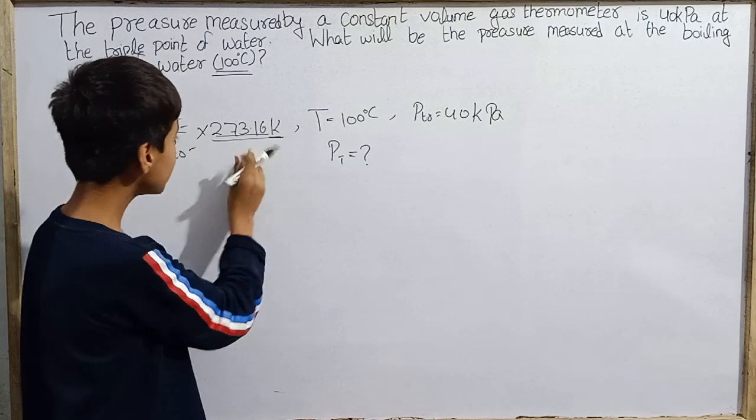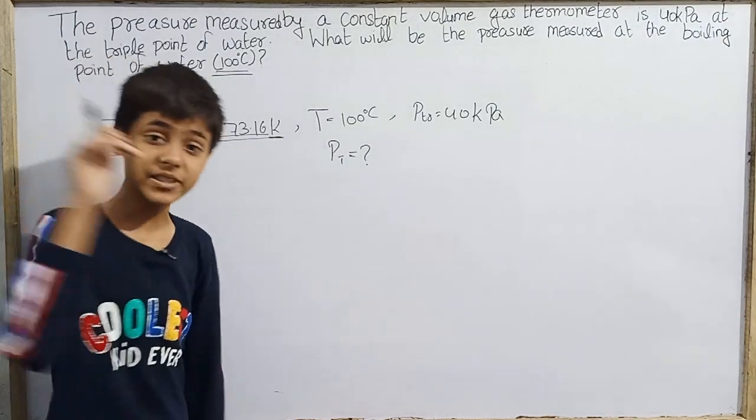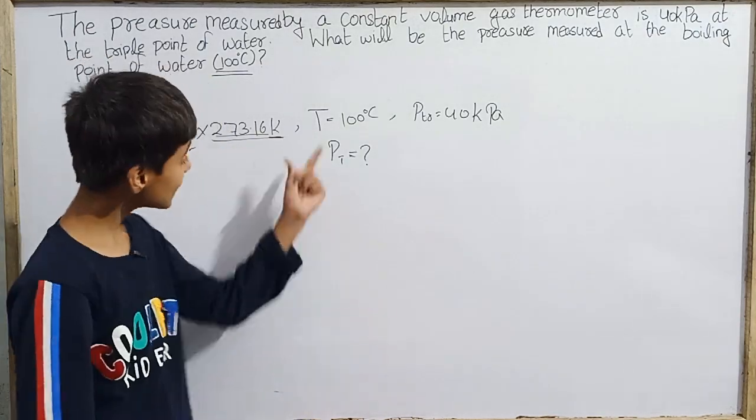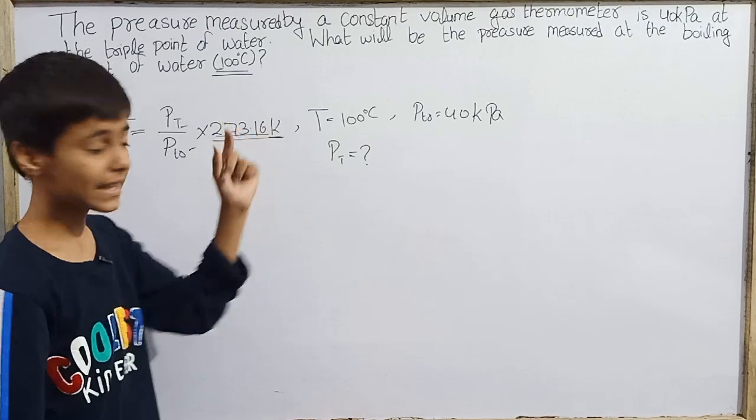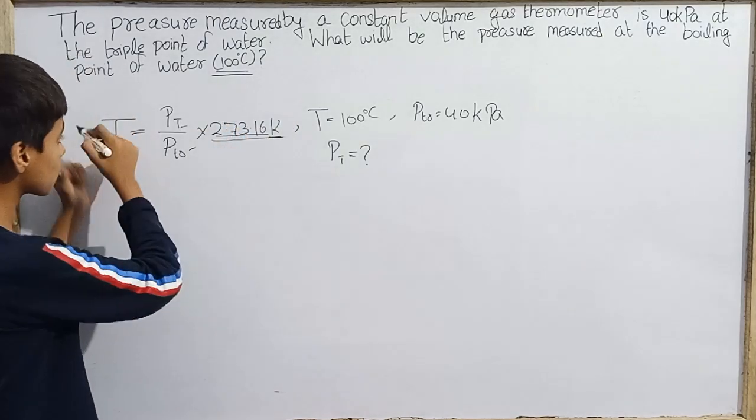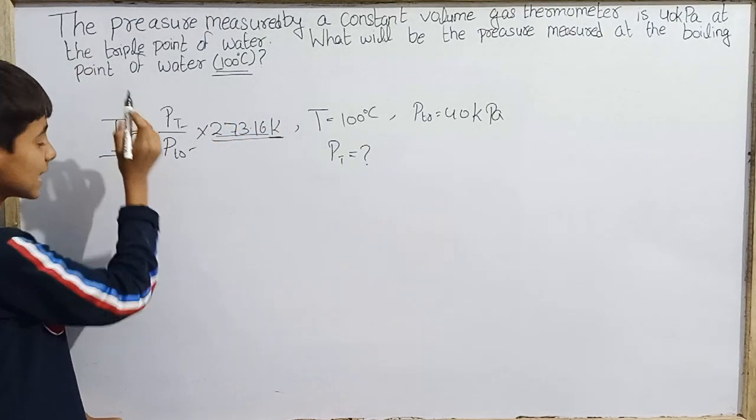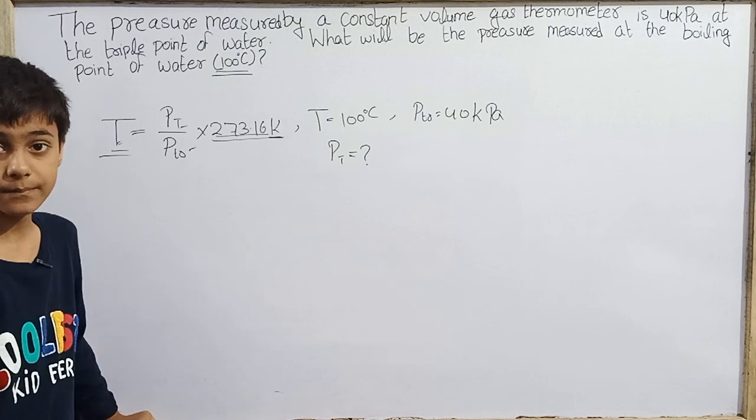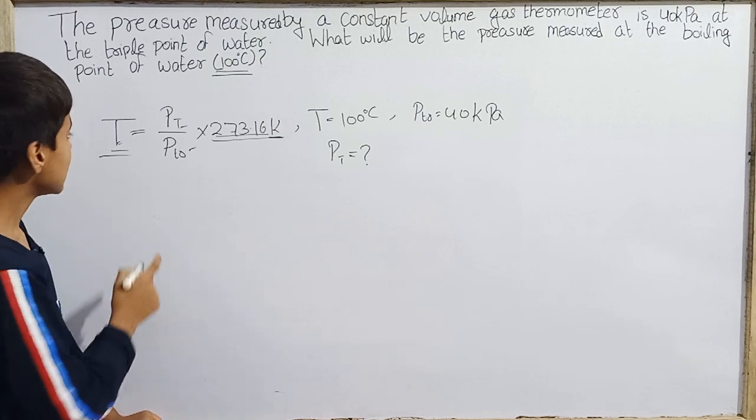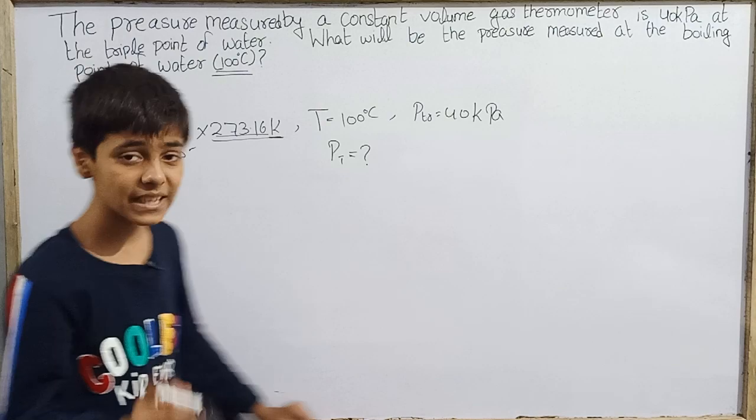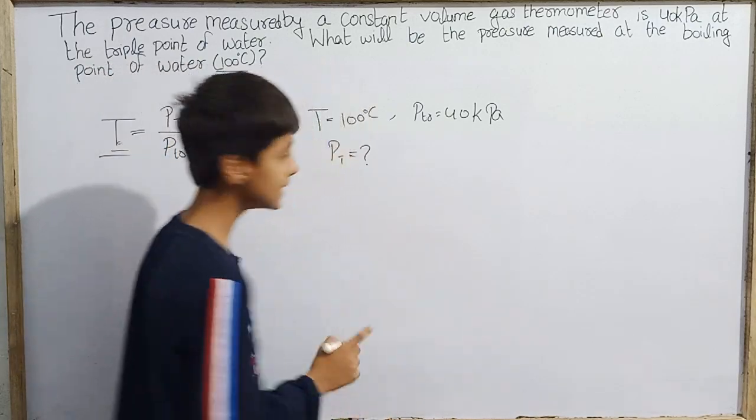Because this value that is constant is always multiplied, this will not change. This is in Kelvin. So for this and this to cancel out, this should be in Kelvin. So we need temperature in Kelvin, but we are given degrees Celsius.